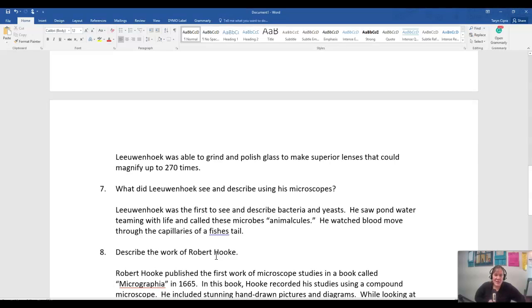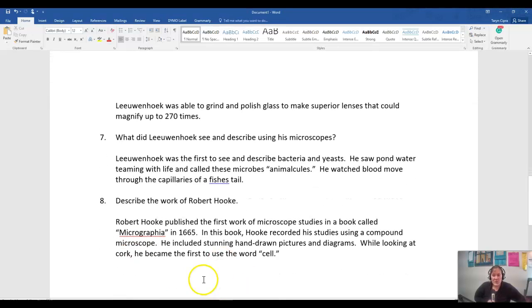What did he see? He was one of the first scientists to actually see bacteria, yeast, and small eukaryotic organisms swimming in pond water. He called those microbes animalcules. He watched blood moving through capillaries of fish tails and was one of the first people to ever look at human sperm and dog sperm underneath the microscope. He was looking at cells, but Robert Hooke was around the same time period.